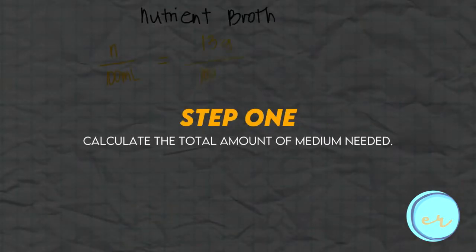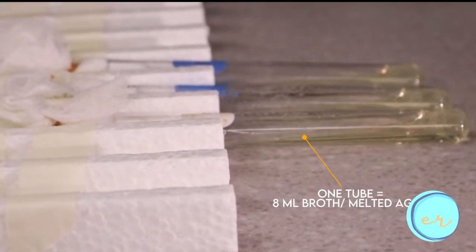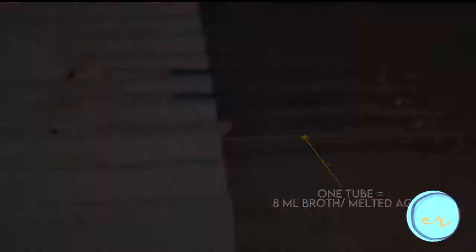As before, we have to calculate the total amount of medium needed. We have to decide how many slants and how much broth we will use. Then we weigh.